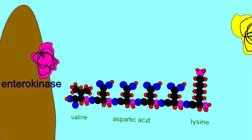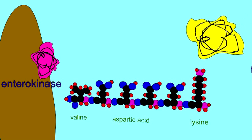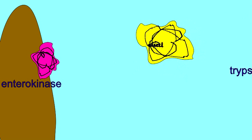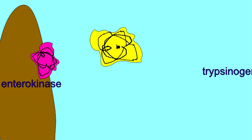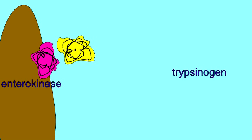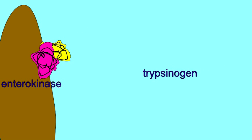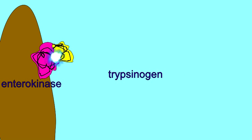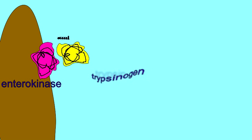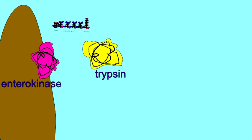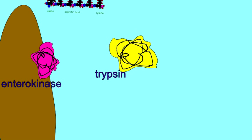Trypsinogen possesses such a sequence. Trypsinogen, the inactive form of the enzyme, is secreted from the pancreas, and in the small intestine, enterokinase cleaves this sequence from the end of the amino acid chain. This converts the inactive trypsinogen into the active form trypsin.